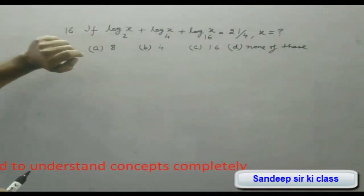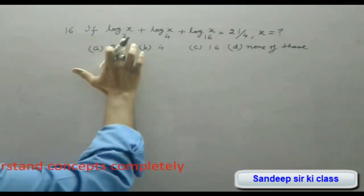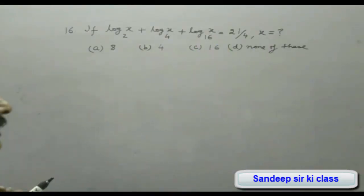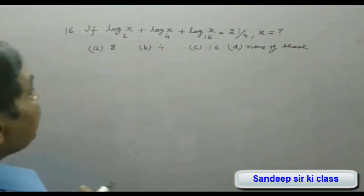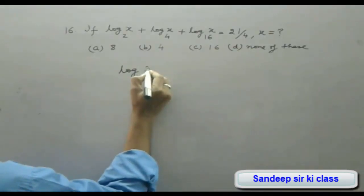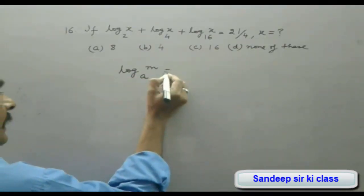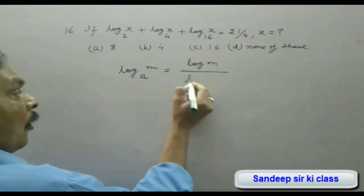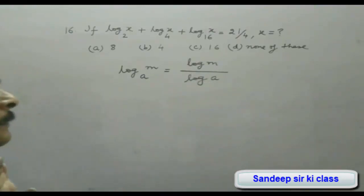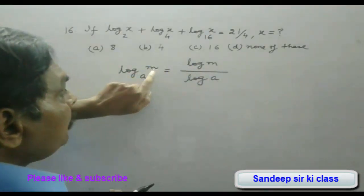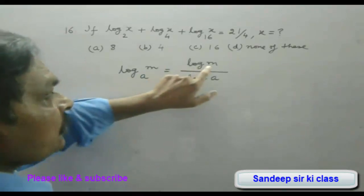We notice that on the left-hand side the bases are different — base 2, base 4, and base 16. So we first convert all terms to base 2. For that we use the formula: log m to the base a equals log m divided by log a, for any base.